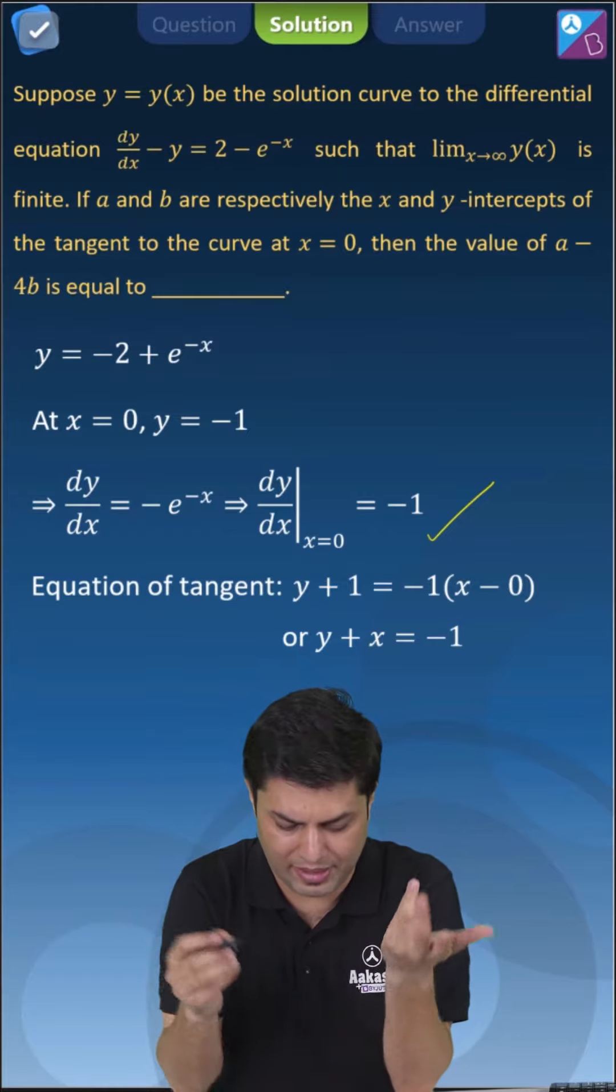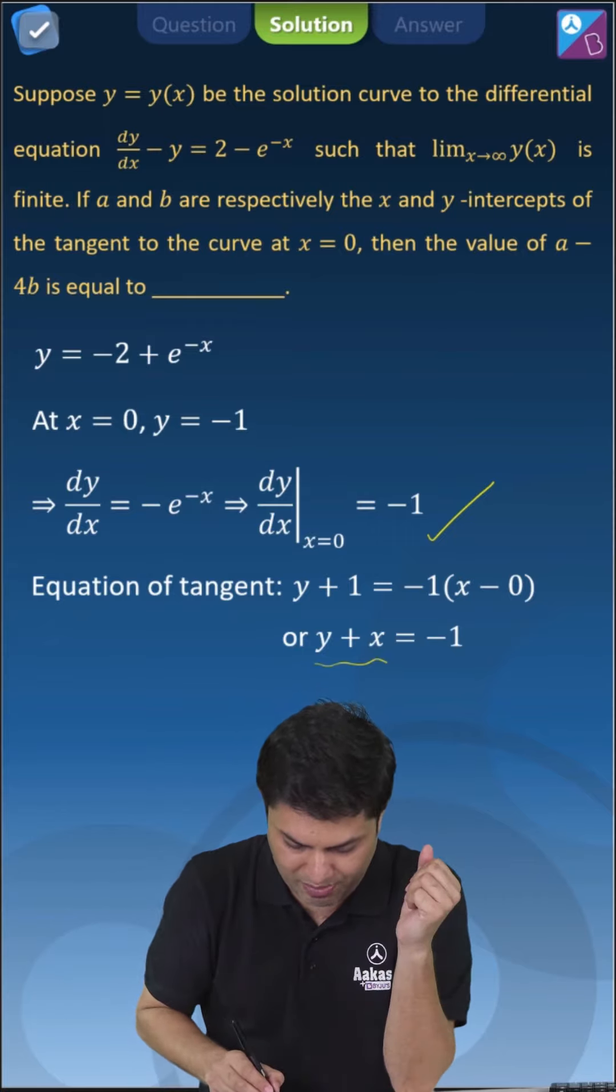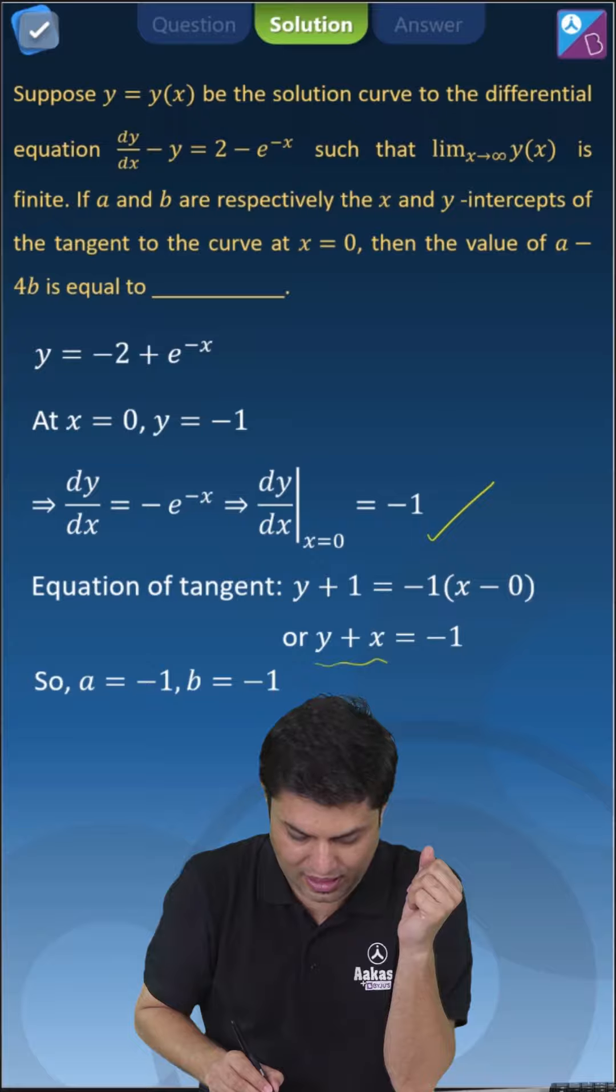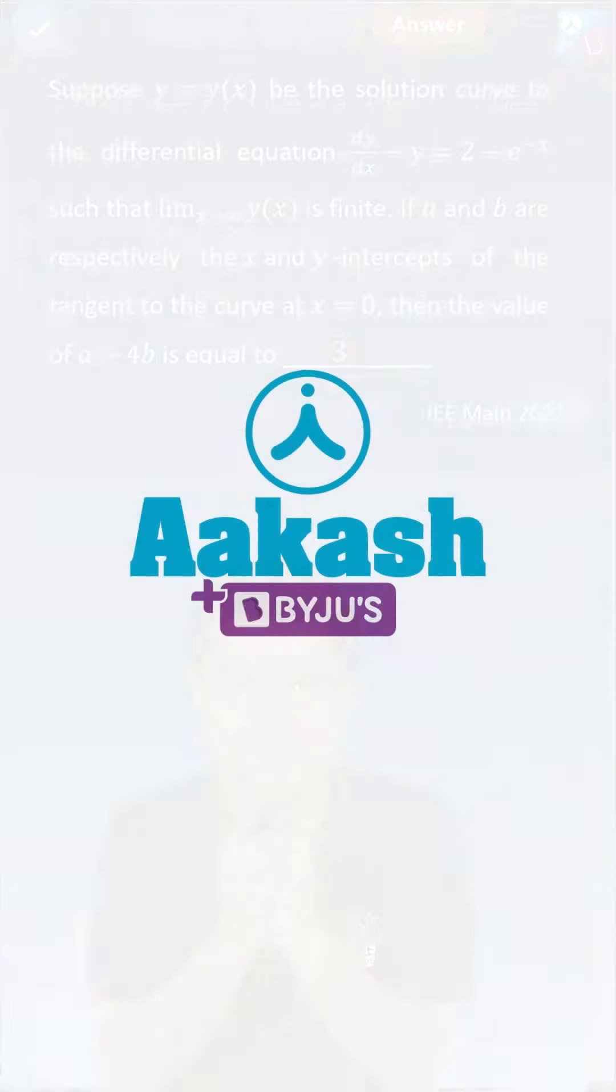So the x and y intercepts, if you see, are both minus 1. So a equals minus 1, b equals minus 1, therefore a minus 4b equals 3.